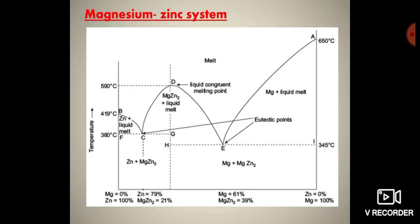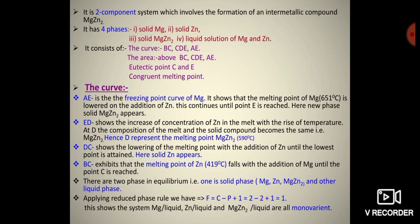Curve ED shows the increase in concentration of zinc in the melt with the rise of temperature. At D, the composition of the melt and the solid compound become the same, that is, MgZn₂. Hence, D represents the melting point of MgZn₂, which is 590°C. The curve DC shows the lowering of the melting point with the addition of zinc until the lowest point is attained.